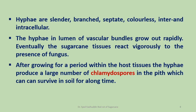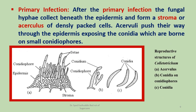After primary infection, the fungal hyphae collect beneath the epidermis and form a stroma or acervuli of densely packed cells. Acervuli are formed on the surface of the rind as minute structures. These acervuli push their way through the epidermis, exposing the conidia which are borne on small conidiophores. The conidiophores are small and aseptate, whereas conidia are usually falcate — that is, sickle-shaped — hyaline and densely granular with large oil globules in the center.